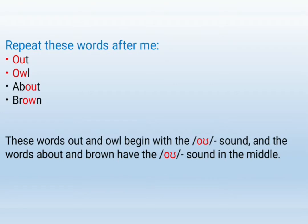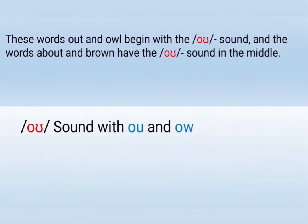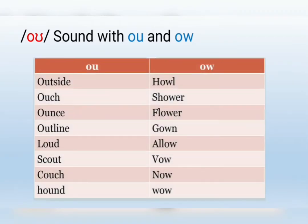The words out and owl begin with the OU sound. The words about and round have the OU sound in the middle. Let's practice the OU sound.